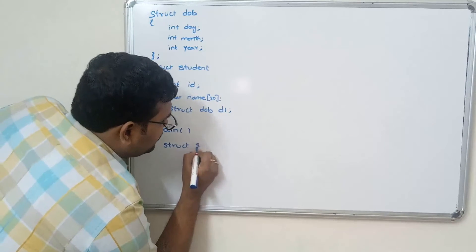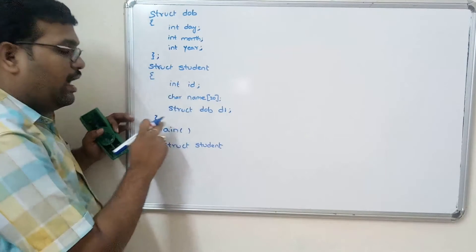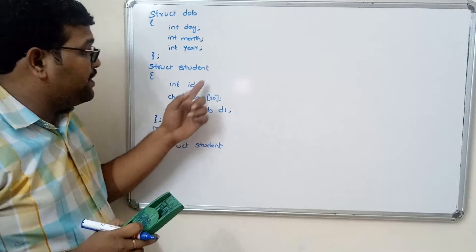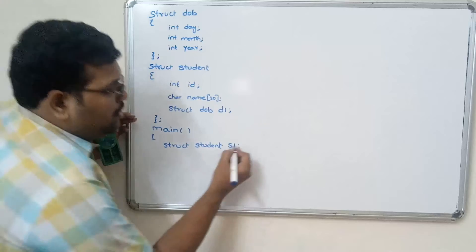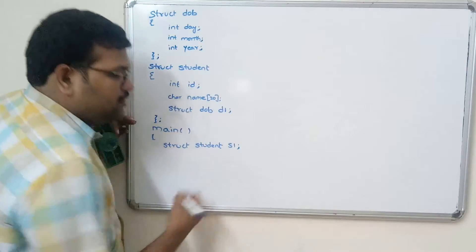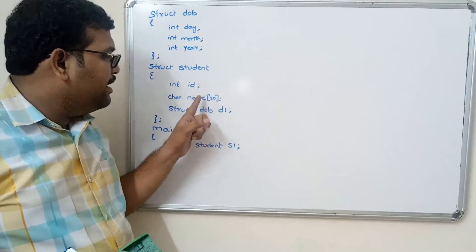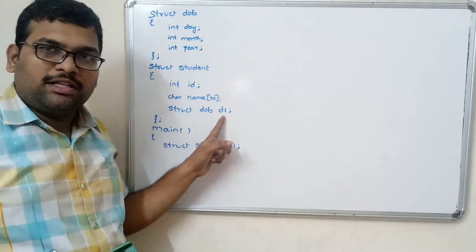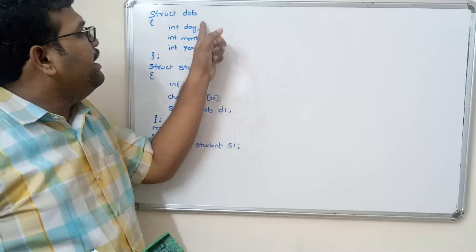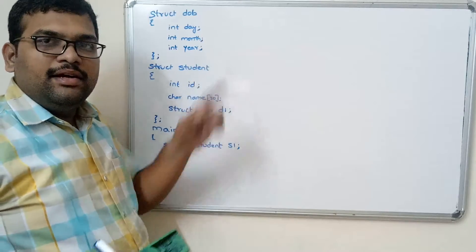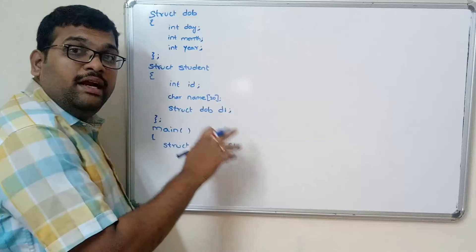Inside the main function, we declare the structure variable: `struct student s1`. So s1 will have id, name, and date of birth, and date of birth in turn has day, month, and year. To access the members of a structure we need a structure variable and the dot operator.